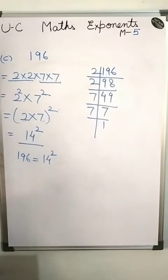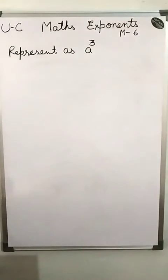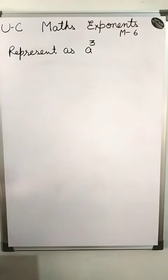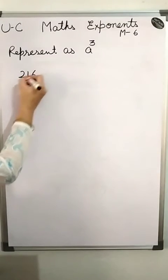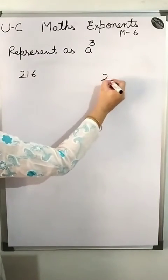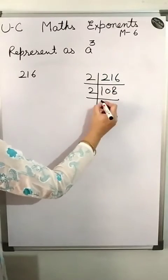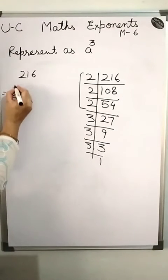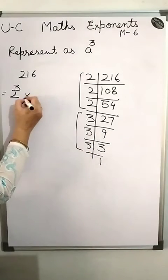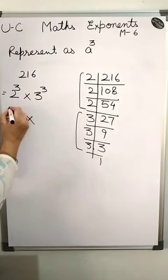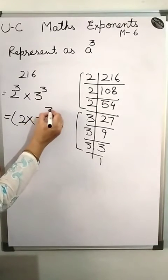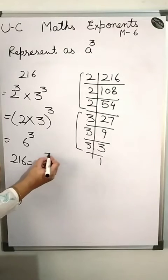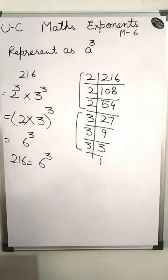Now we come to the next module where we represent a number as a cube, that is a to the power 3. Let's take 216. Calculating its prime factors, we get 2 to the power 3 and 3 to the power 3. We write this as a combined number: (2 × 3) whole to the power 3, which is 6 cubed. So 216 is equivalent to 6 cubed.